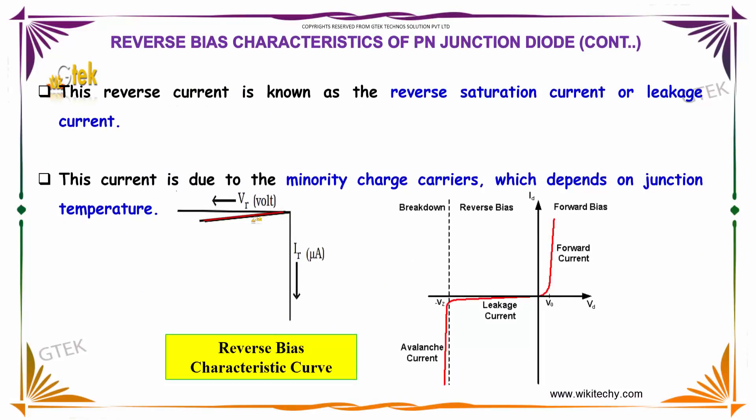This reverse current is known as the reverse saturation current or leakage current. This current is due to the minority charge carriers, which depends on junction temperature.